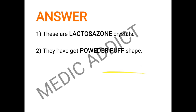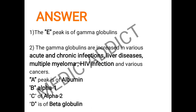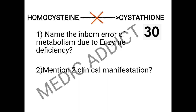Moving to the next spot, this is a pictorial representation in which we have to identify peak E and give the important conditions in which the height of the peak increases. The given peak E is the gamma globulin peak. Gamma globulins are increased in various acute and chronic infections, liver diseases, multiple myeloma, HIV infection, and various cancers. Peak A is albumin, peak B is alpha-1 protein, peak C is alpha-2 protein, peak D is beta globulin, and peak E is gamma globulins.